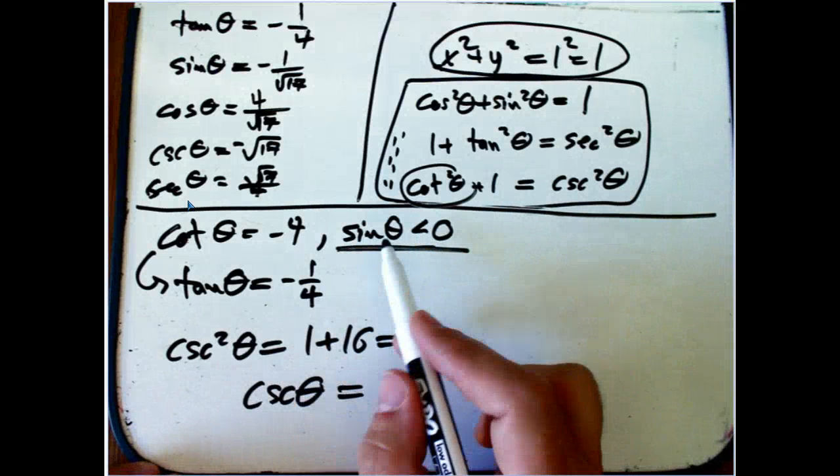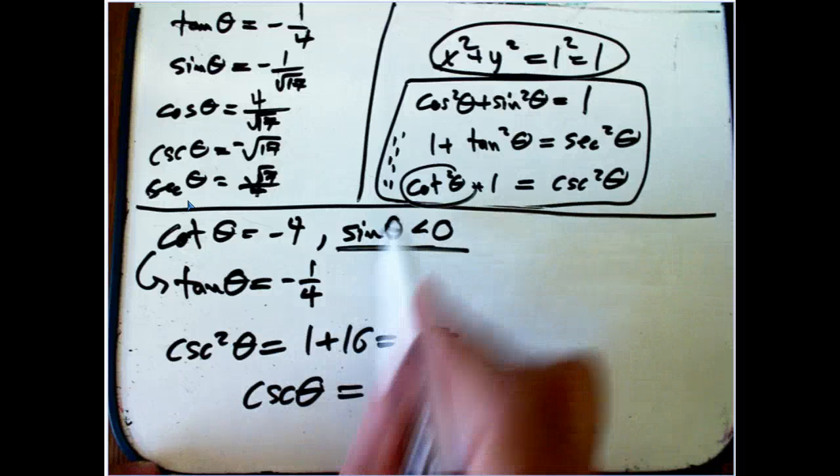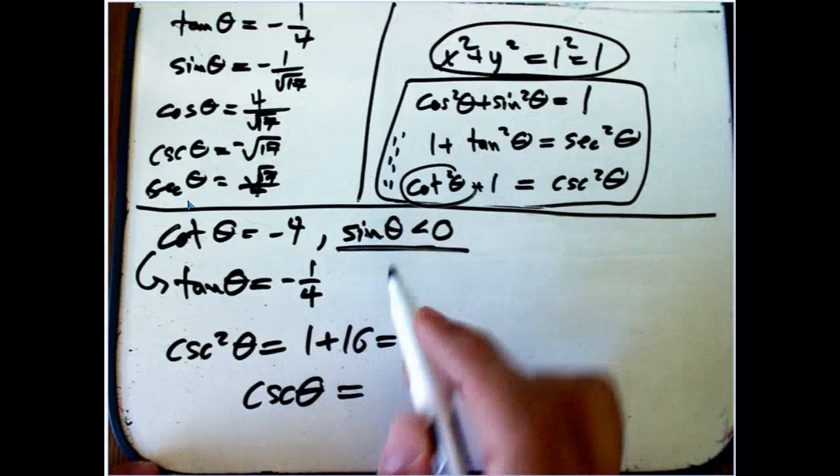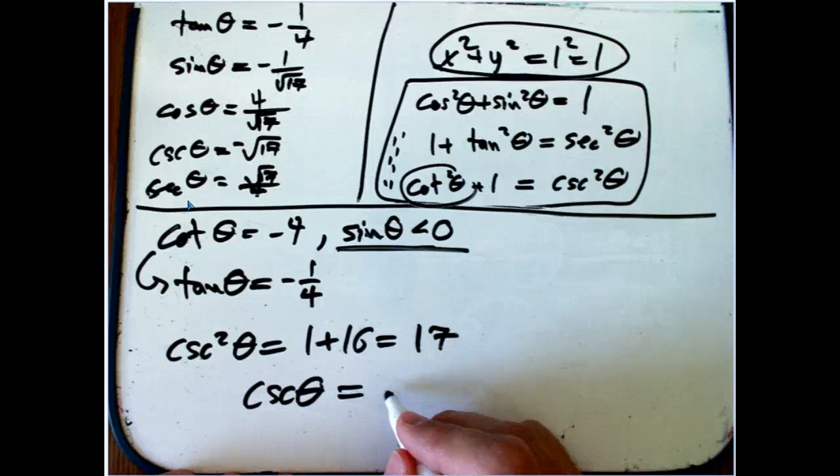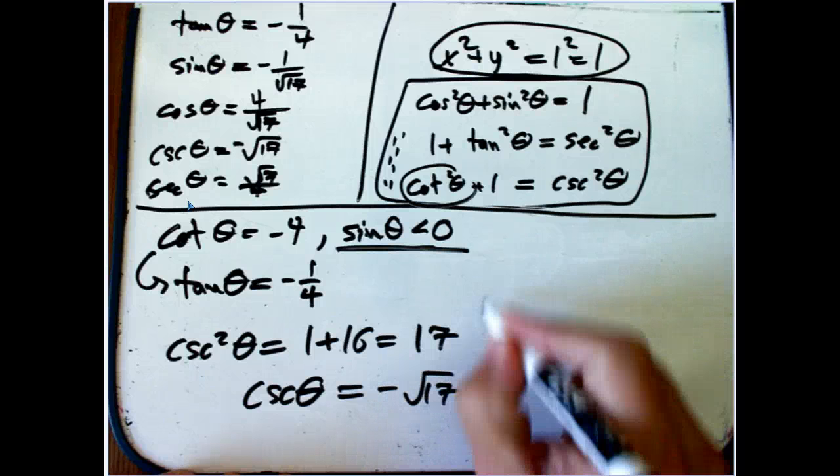Cosecant we need to remember is 1 over sine. And again, that can be a little confusing. You just have to memorize that correctly. And so I'm going to take the negative of the square root. Boom. Done.